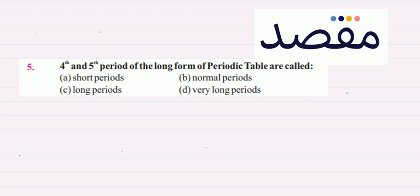The options are: Short Periods, Normal Periods, Long Periods, Very Long Periods. So if I look at this,